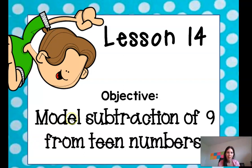Hey first graders, it's Mrs. Daniel. Today we're going to work on lesson 14 in module 2. Let's look at our objective. Model subtraction of 9 from teen numbers. So before we were working with numbers from 10 and now we're looking at from teen numbers.